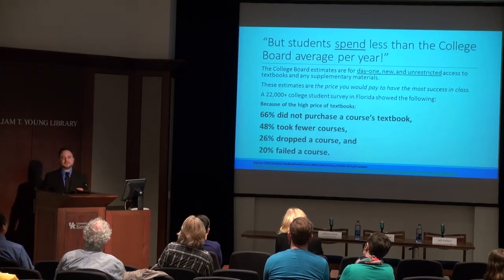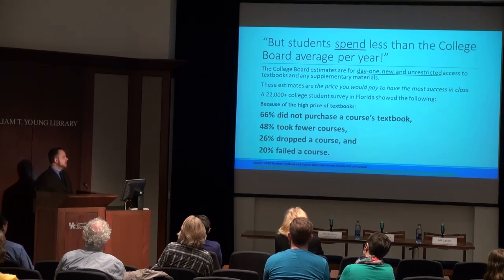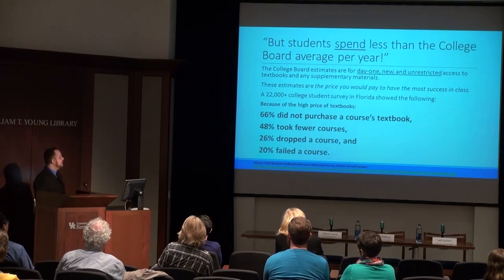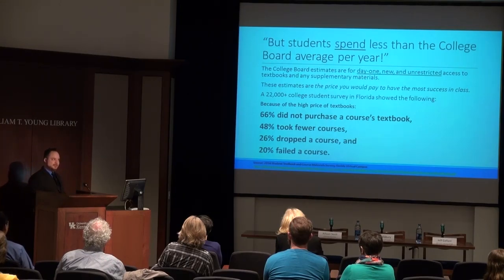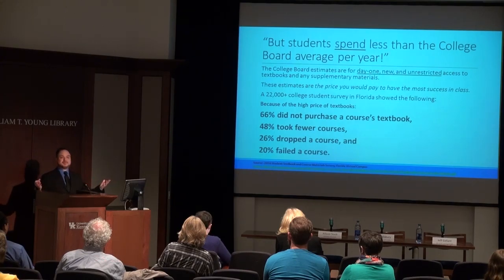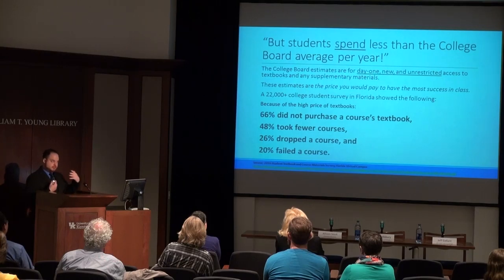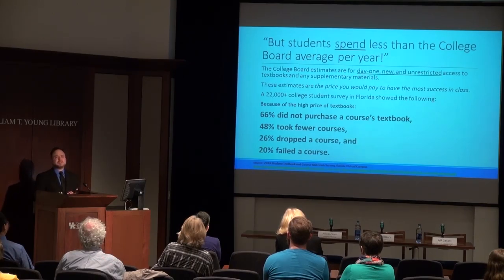66% — from the 2016 Florida Virtual Campus Survey, with similar numbers in the 2012 and 2010 surveys. 48% reported taking fewer courses because they're pricing in the cost of the textbook. 26% would drop a course when they see what the textbook costs. And 20% self-reported that they failed a course because they did not buy the textbook. This is self-reporting, so we can't exactly measure it, but they are saying it at least contributed to a lower grade. This was about 22,000 college students surveyed in Florida — a really big sample size.